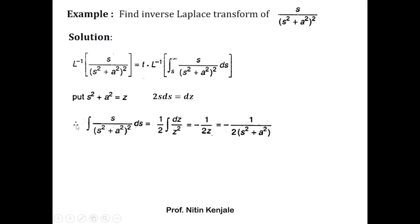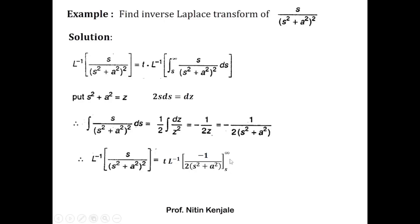Substituting this value of the integral, we have L inverse of φ(s) = t into L inverse of [−1 upon 2(s² + a²)] evaluated over the limit s to infinity. When we put infinity into s we get −1/∞ = 0, and putting the lower limit s gives minus of minus 1, that is +1 upon 2(s² + a²). Taking the constant 2 out, we have L inverse of φ(s) = t/2 into L inverse of 1 upon (s² + a²).